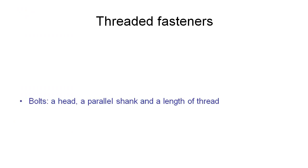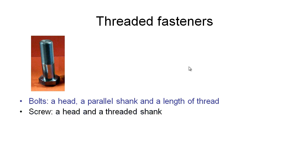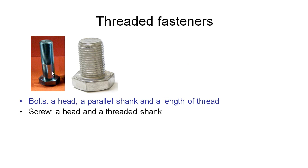Starting first with threaded fasteners, the most common form is what we call a bolt. A bolt has very particular features: a head at the bottom, a parallel shank which doesn't have a thread on it, and then a length of thread above that. If a bolt doesn't have this parallel section, that's what we call a screw — threaded all the way down to the head.